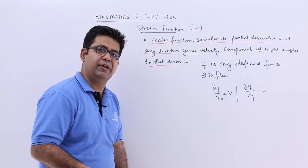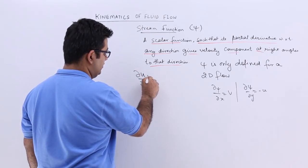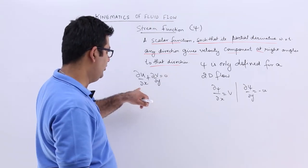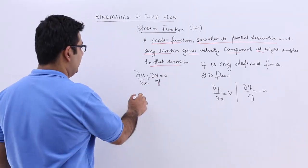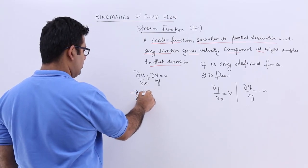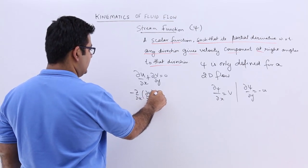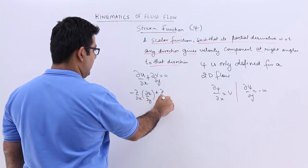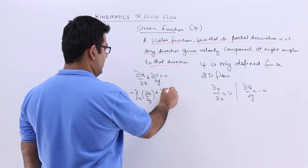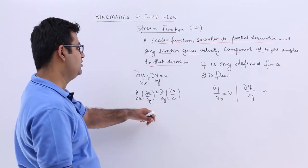Now again for a steady incompressible flow, the continuity equation becomes this. So I will put the values of u and v. It will become minus curly by curly x into curly psi upon curly y plus curly by curly y into curly psi upon curly x. Now this is obviously equal to 0.